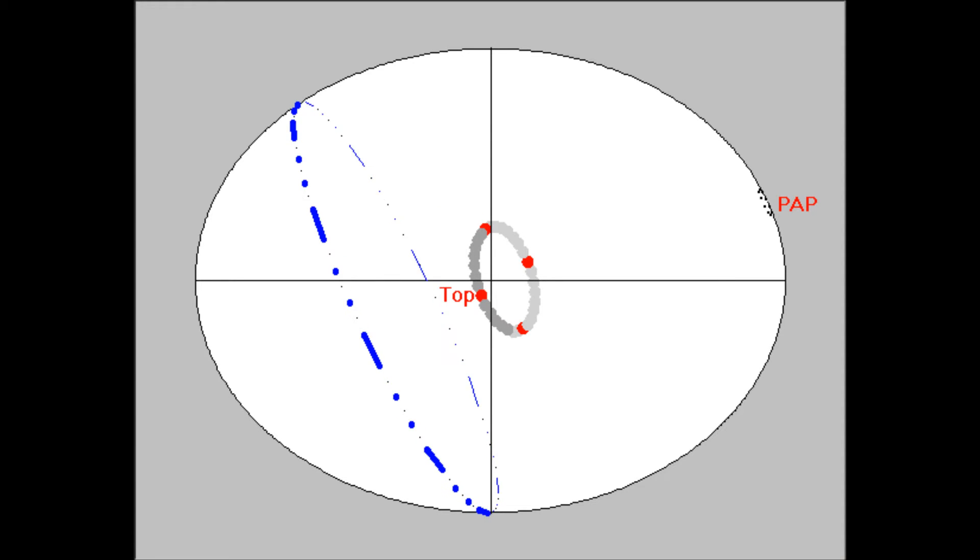As it continues to roll, top weight becomes thumb weight. Another quarter turn and thumb weight becomes bottom weight. Bottom weight then returns to finger weight and so on as the ball rolls down the lane.